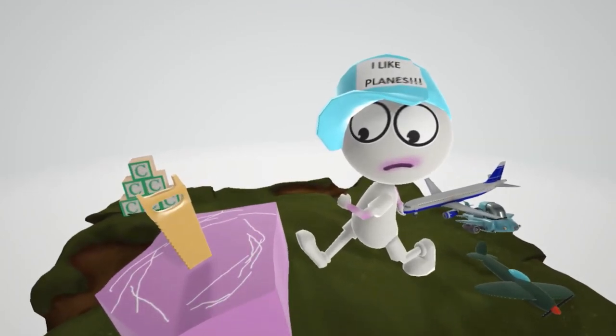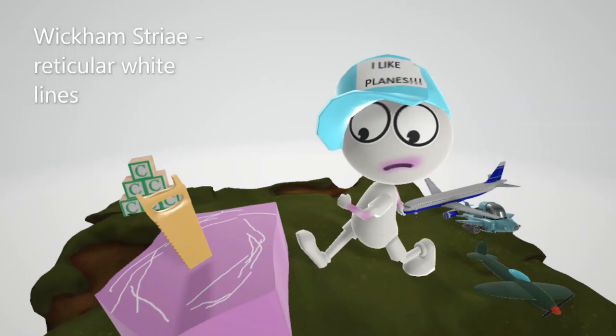The Wickham striae. When there's mucosal involvement in lichen planus it manifests as Wickham striae, which are reticular white lines which you can see on the gross morphology. Why is there a saw over here?